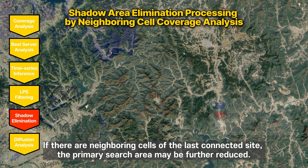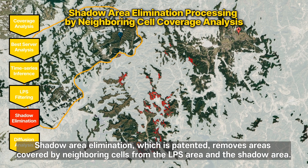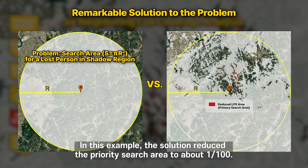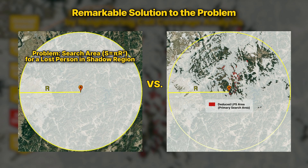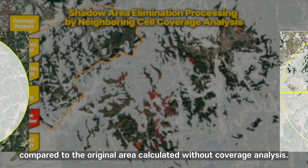If there are neighboring cells of the last connected site, the primary search area may be further reduced. Shadow area elimination, which is patented, removes areas covered by neighboring cells from the LPS area and the shadow area. In this example, the solution reduced the priority search area to about one-one-hundredth compared to the original area calculated without coverage analysis.